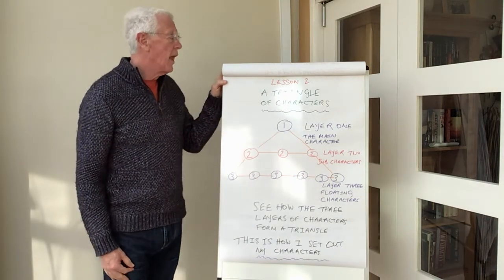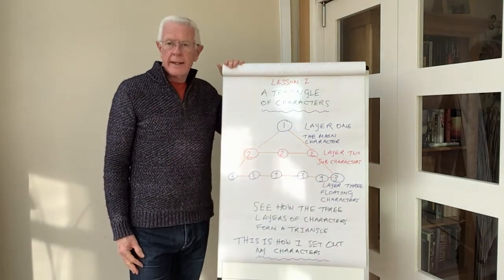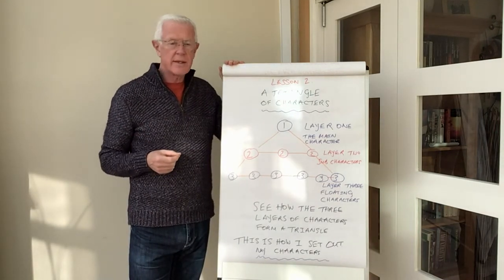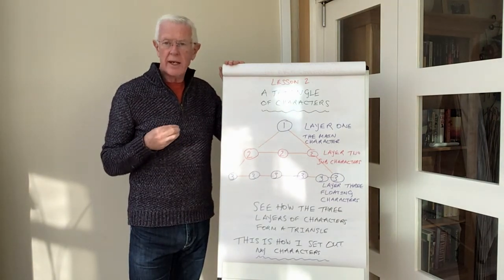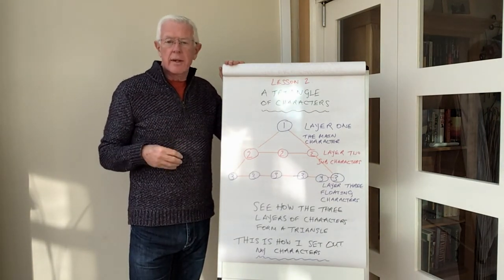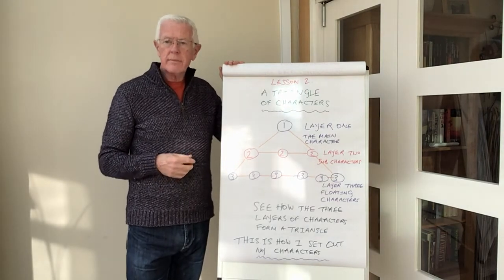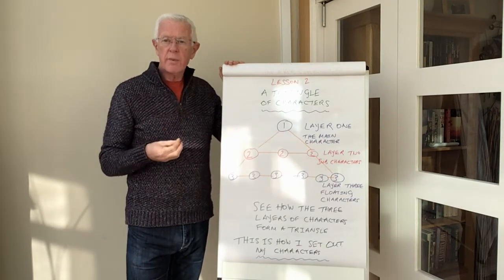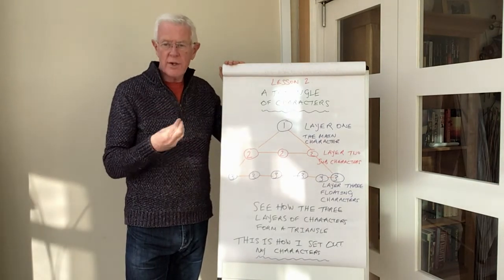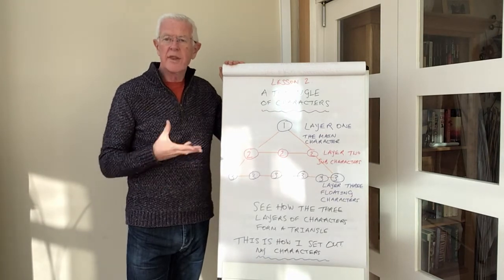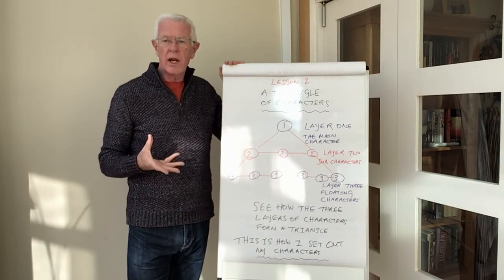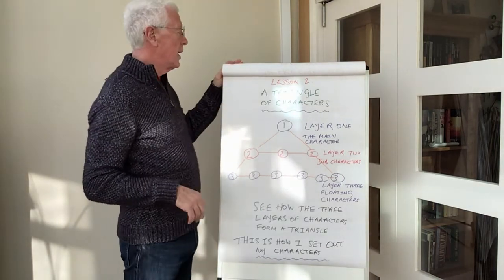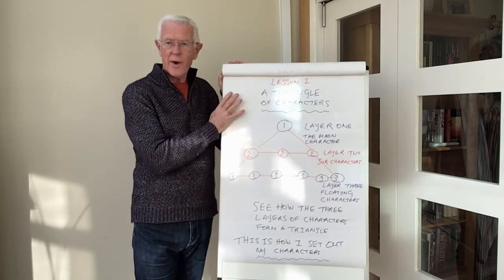Welcome to Lesson 2. I hope you enjoyed last week's podcast where I talked to you about creating the main character and the characteristics you need to look at. This week we're going to move on to characters again, but this week we're going to look at sub-characters and floating characters and the triangle of characters that I create. This is the formula that I use. So Lesson 2: a triangle of characters.